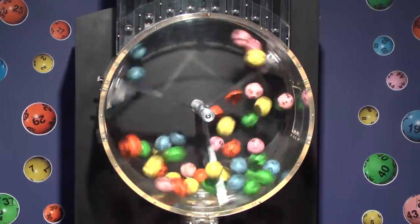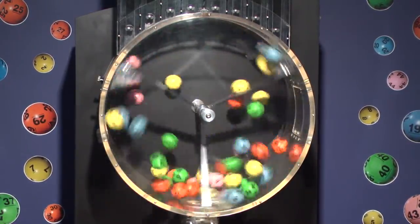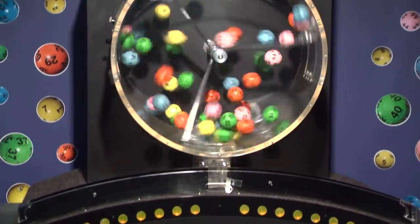Tonight's estimated jackpot is $3.7 million. Now let's see how you did in tonight's Megabucks Doubler Drawing.